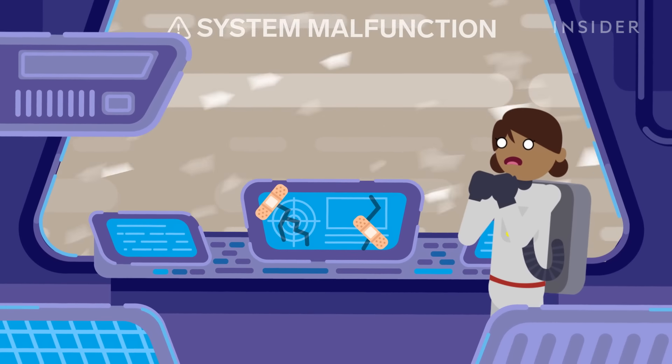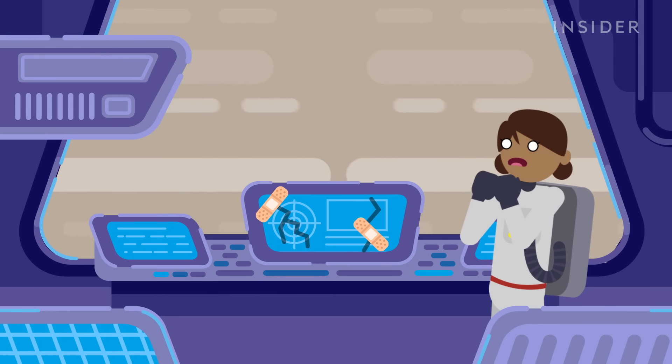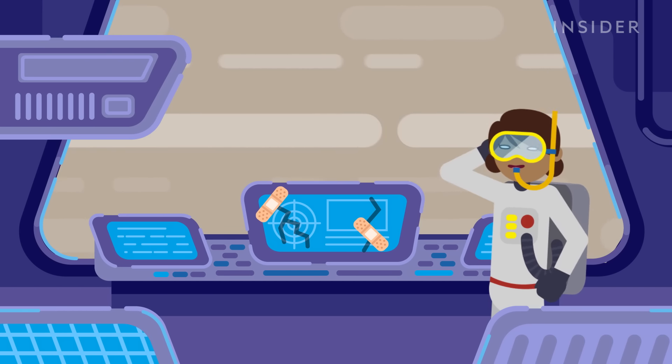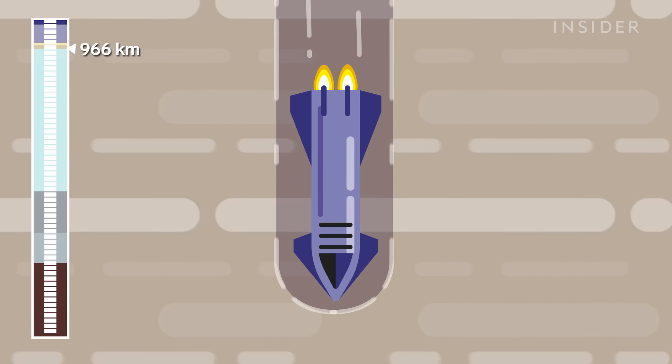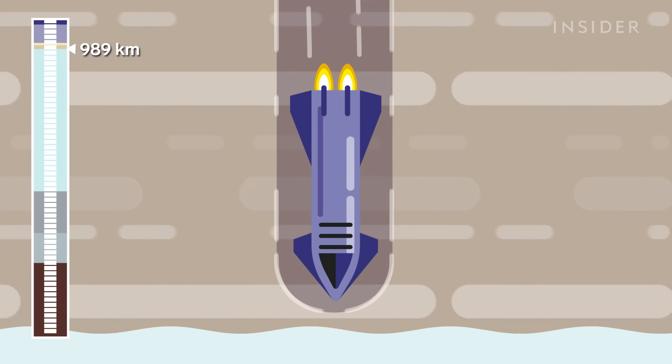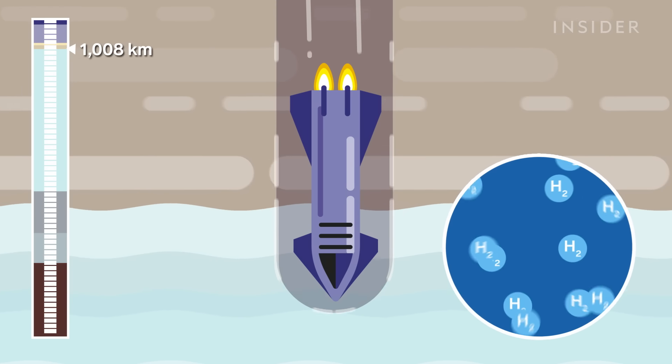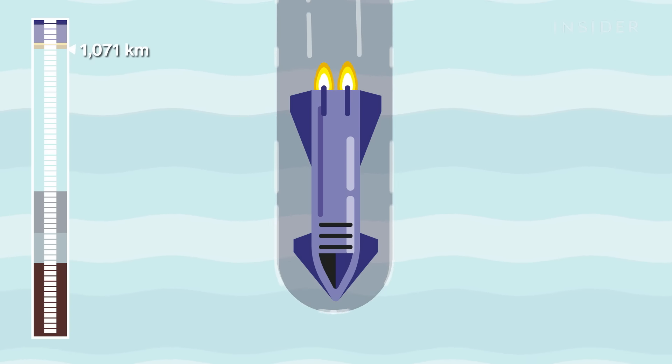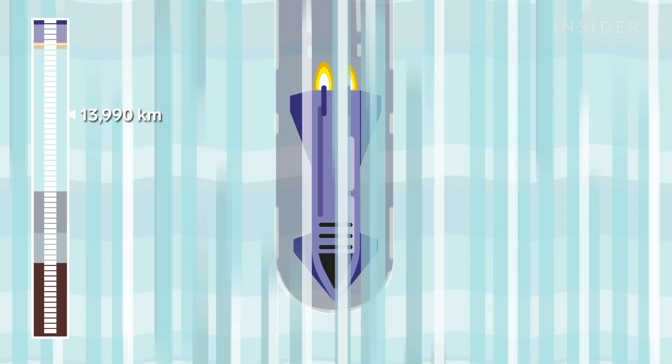Hopefully, the ice won't shred our ship to pieces. But if we make it through, get ready to go for a swim. Because 1,000 kilometers into the interior, the pressure is so high it forces hydrogen molecules together into a liquid, which doesn't bode well for us, since even the sturdiest submarine would be crushed in these conditions.